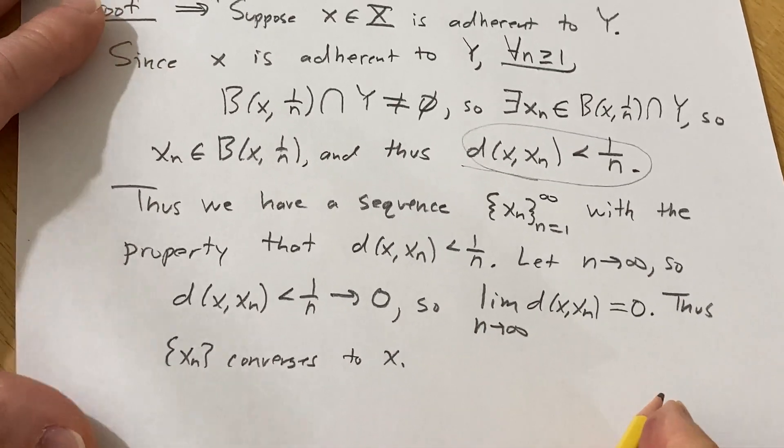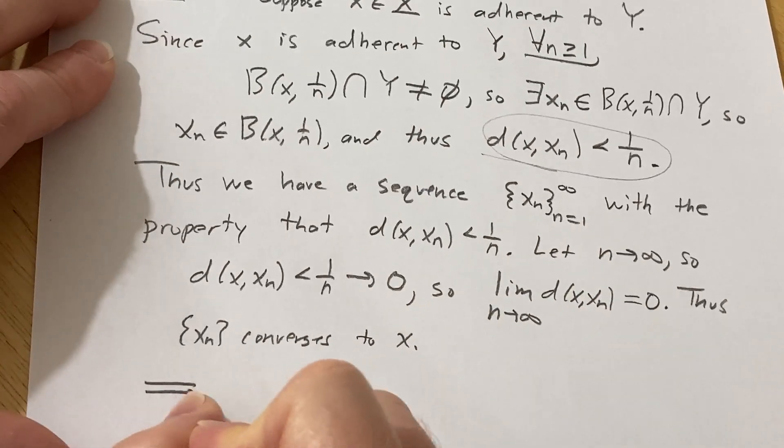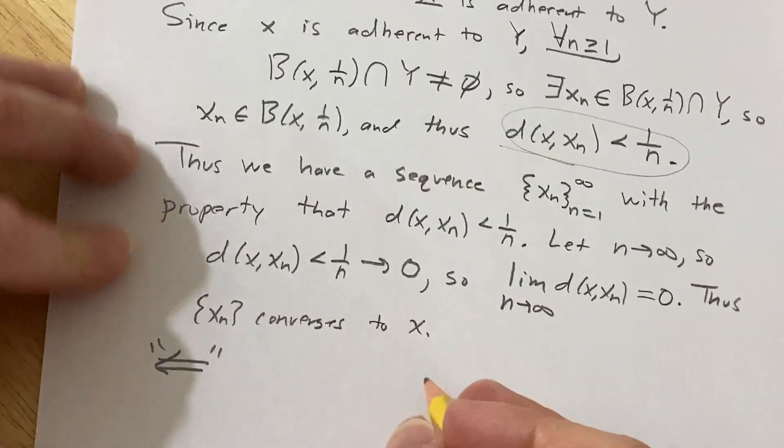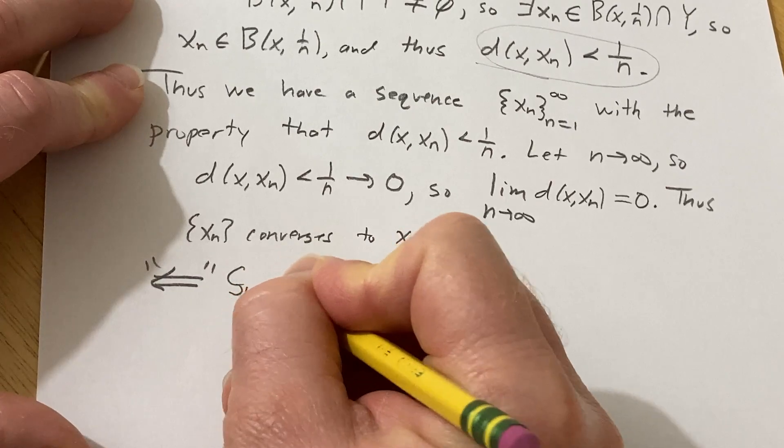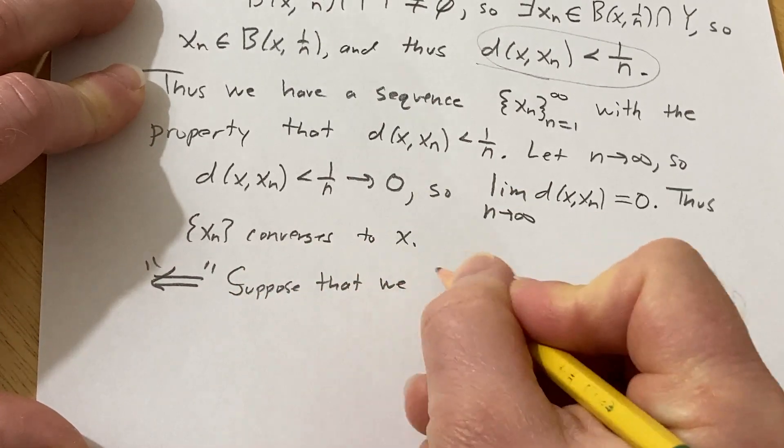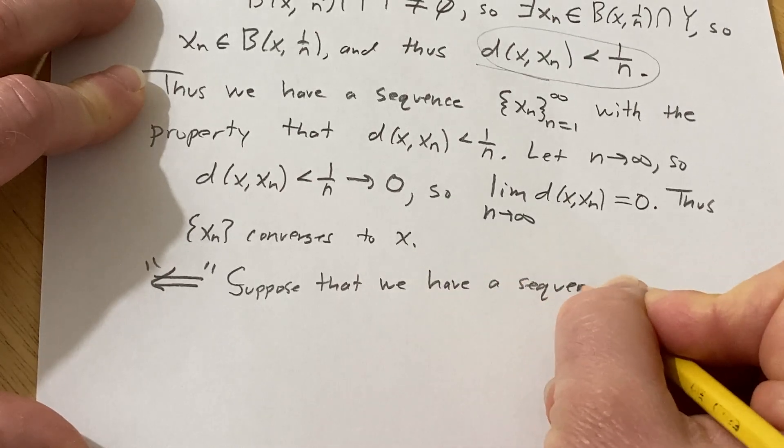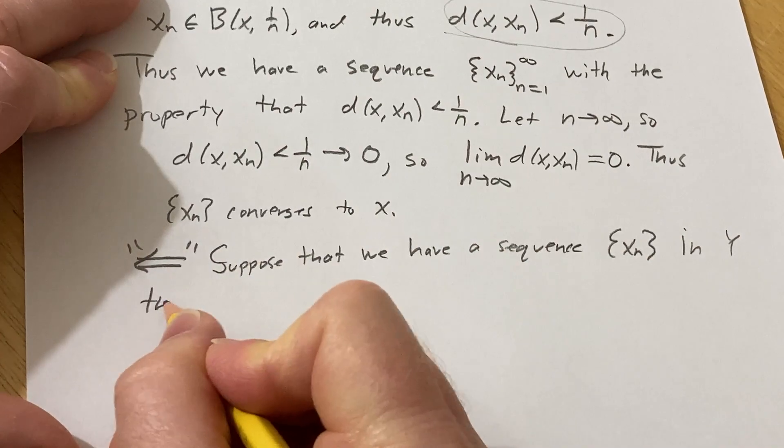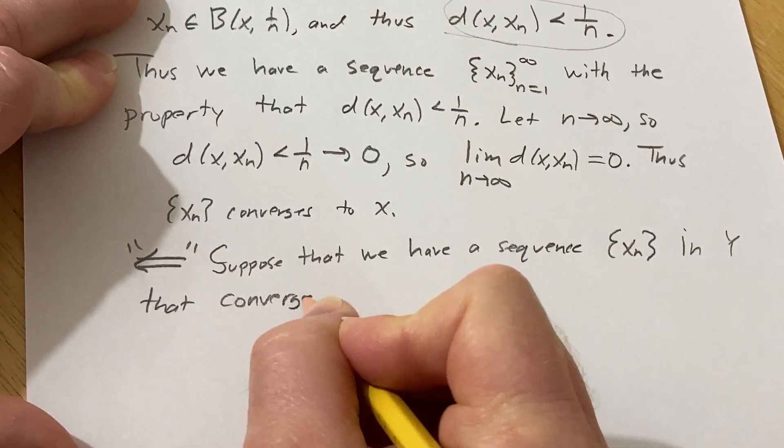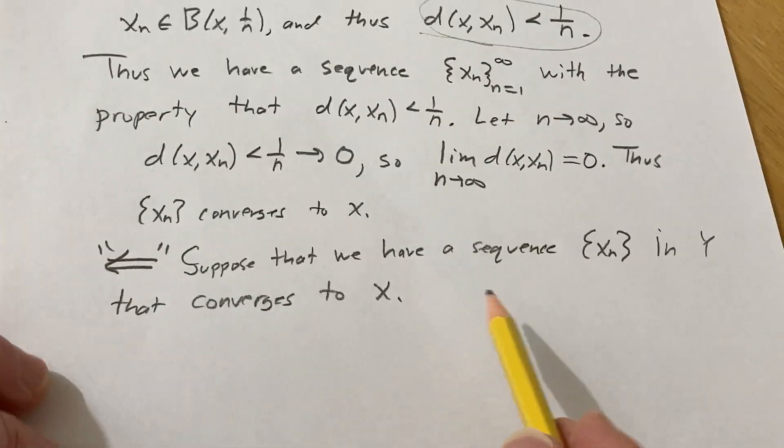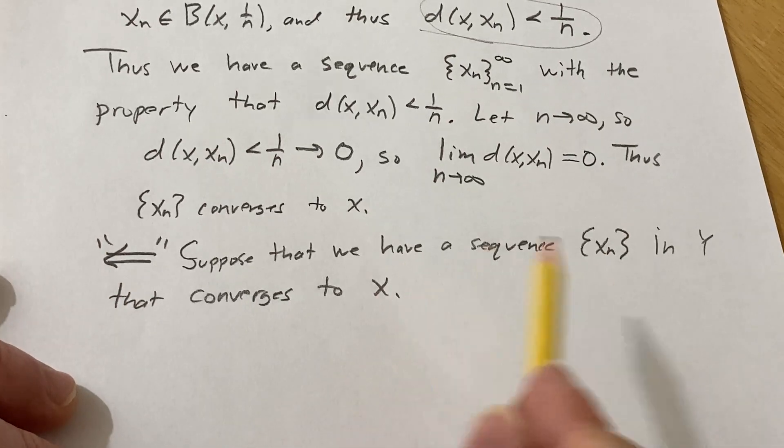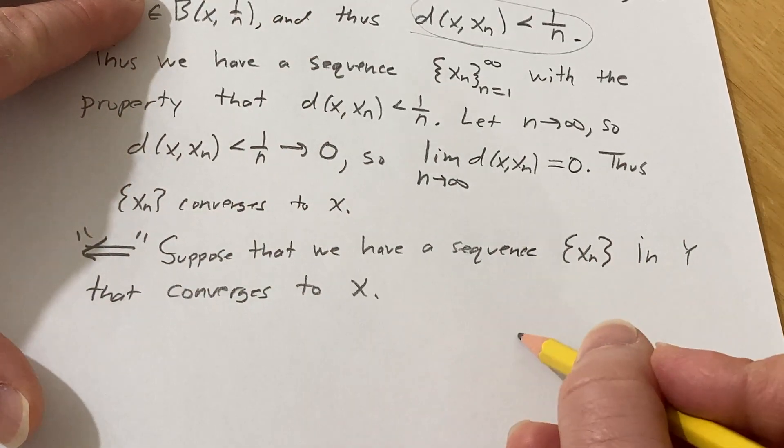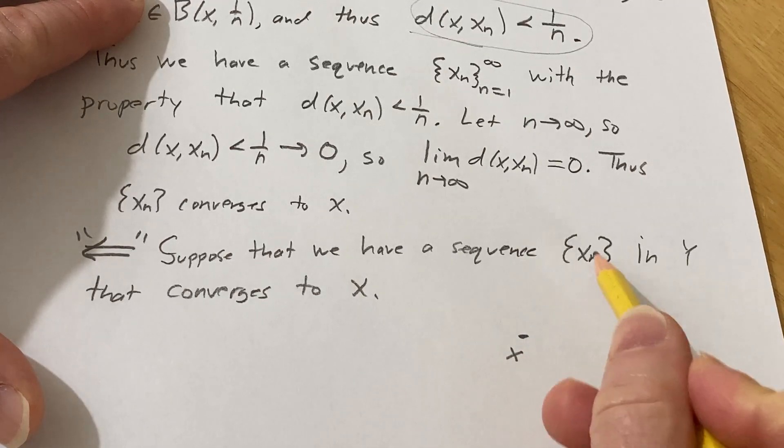Sorry, I know you couldn't see for a moment. I always have a hard time looking at the camera and what I'm writing. So now let's go the other way. So now we have to assume that we have a sequence in Y that converges to x and we have to show that x is adherent to Y. So suppose that we have a sequence x sub N that converges to x. Then basically what's going to happen is every single open ball centered at x is going to have points of the sequence.